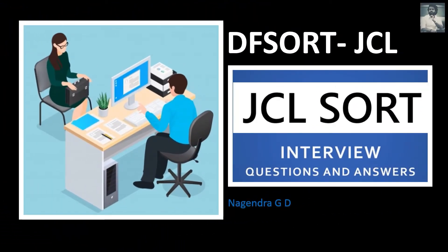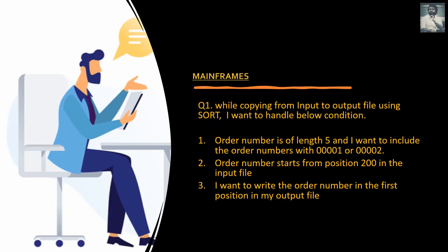Let's go ahead and see what are the important SORT cards we have as part of this video. The first requirement is: while copying from input to output file using SORT, I want to handle the below condition. In my input file, order number is of length 5, and I want to include only order numbers 00001 and 00002. Order number starts from position 200 in the input file, and I want to write the order number in the first position in my output file.